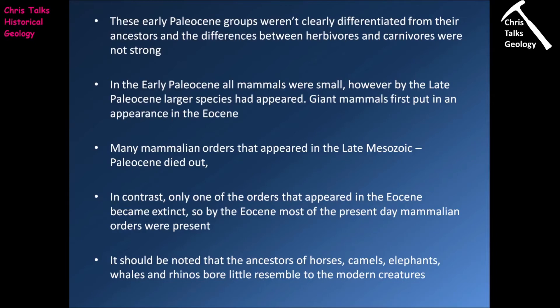In contrast, only one order that made its appearance in the Eocene became extinct, so by the Eocene most of the present-day mammalian orders were represented. It should be noted though that groups like horses, camels, elephants, whales and rhinos bore little resemblance to their modern-day forms — there was still quite a lot of evolution yet to be done.